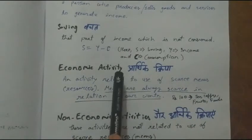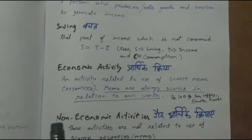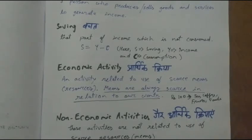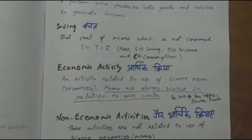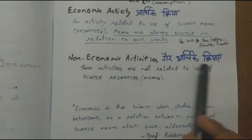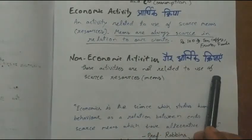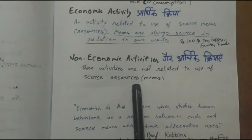Economic activity is that activity which is related to the use of these scarce resources. On the other hand, non-economic activities are those activities which are not related to the use of scarce resources — meaning without paying anything, if we get something, we are not using any scarce resource.